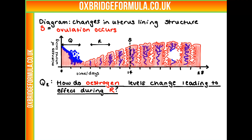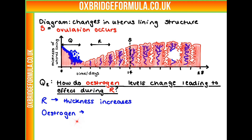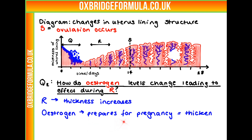Our second question is how do estrogen levels change, leading to the effect during R? R is this section here. We can see that the uterus lining is thickening. Estrogen is another hormone involved in regulating female sex organs, and it again prepares the body for pregnancy, so it's going to thicken that lining. If in R we're thickening the lining, that must mean we have an increase in estrogen. That's the answer to our second question.